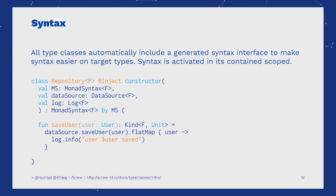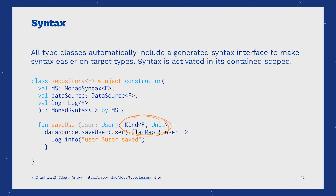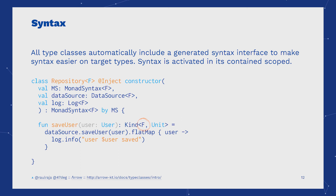Most type classes come with built-in syntax that we can use to achieve direct access to the operations of the type class over the types they decorate. Here we can see Kind<F> as the resultant type of the function. This means that this is a polymorphic context and the operation will be encapsulated in any context of F — that might be an Option, a List, a Promise, or whatever we make concrete at the edge.